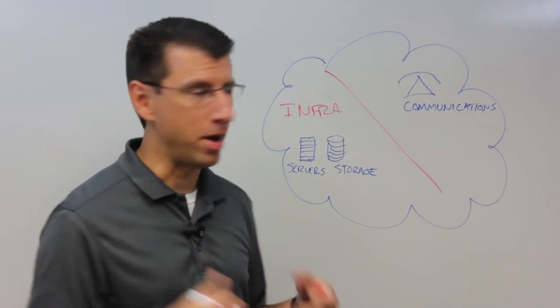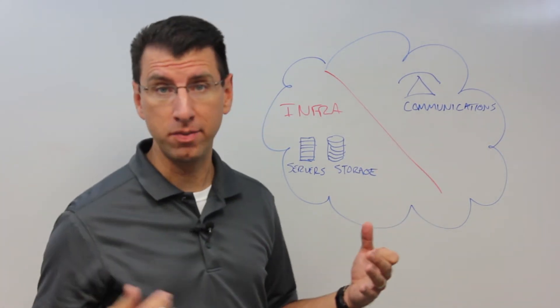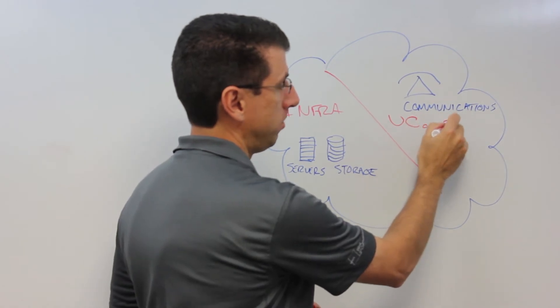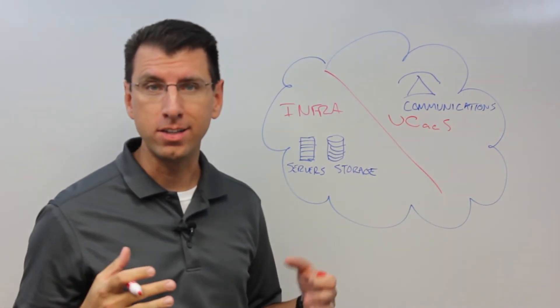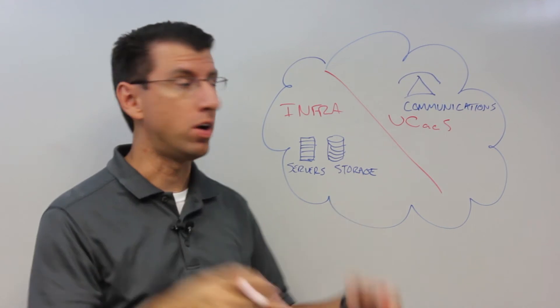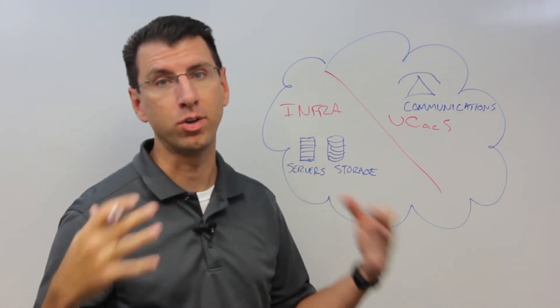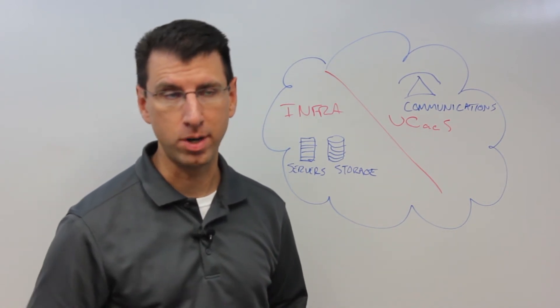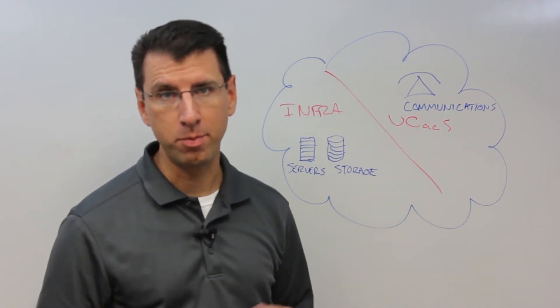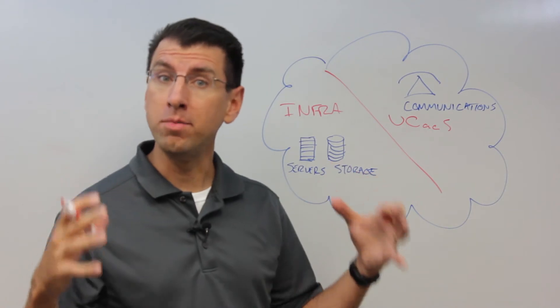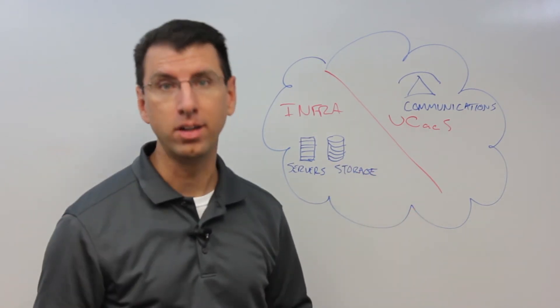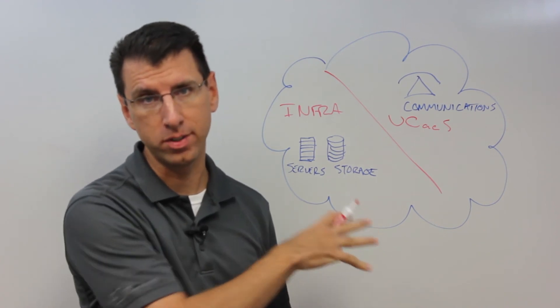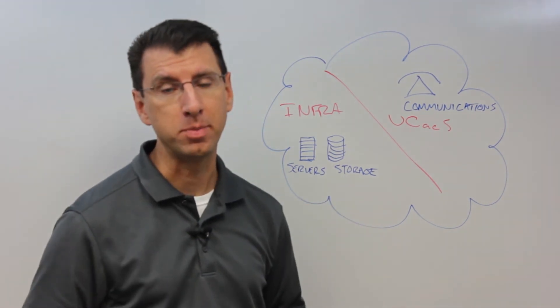The other one that we like to think about is communications as a service or specifically unified communications as a service, UCaaS. UCaaS is a way of delivering an application on top of that infrastructure, specifically applications for communications. Things like voice services, instant messaging and presence, conferencing and collaboration. Those are all unified communication applications delivered as a service in the cloud on top of infrastructure as a service that underpins that specific application.